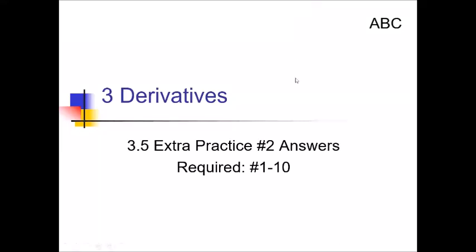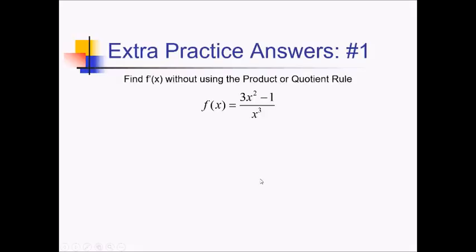Hello there, Mr. Sutton here bringing you the AB Calculus 3-5 Extra Practice Number 2 solutions on product and quotient rules. On this problem, they're asking us to find f' without using the product or quotient rule. So that means we need to simplify first and then use probably the power rule.